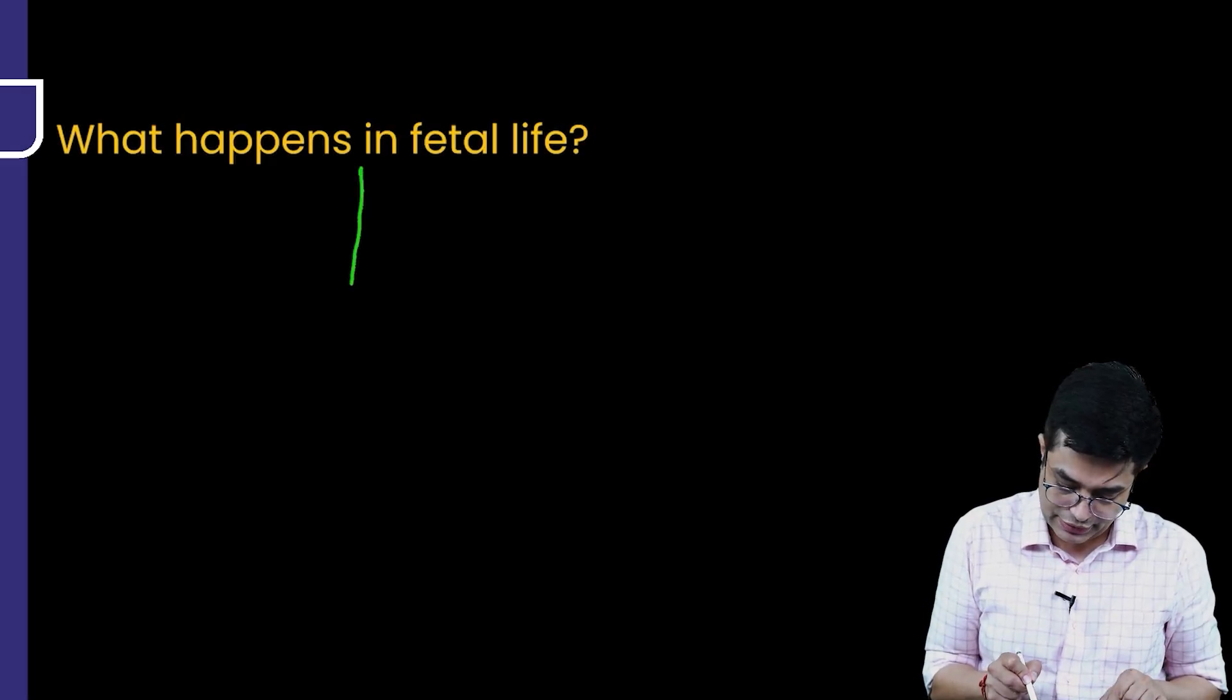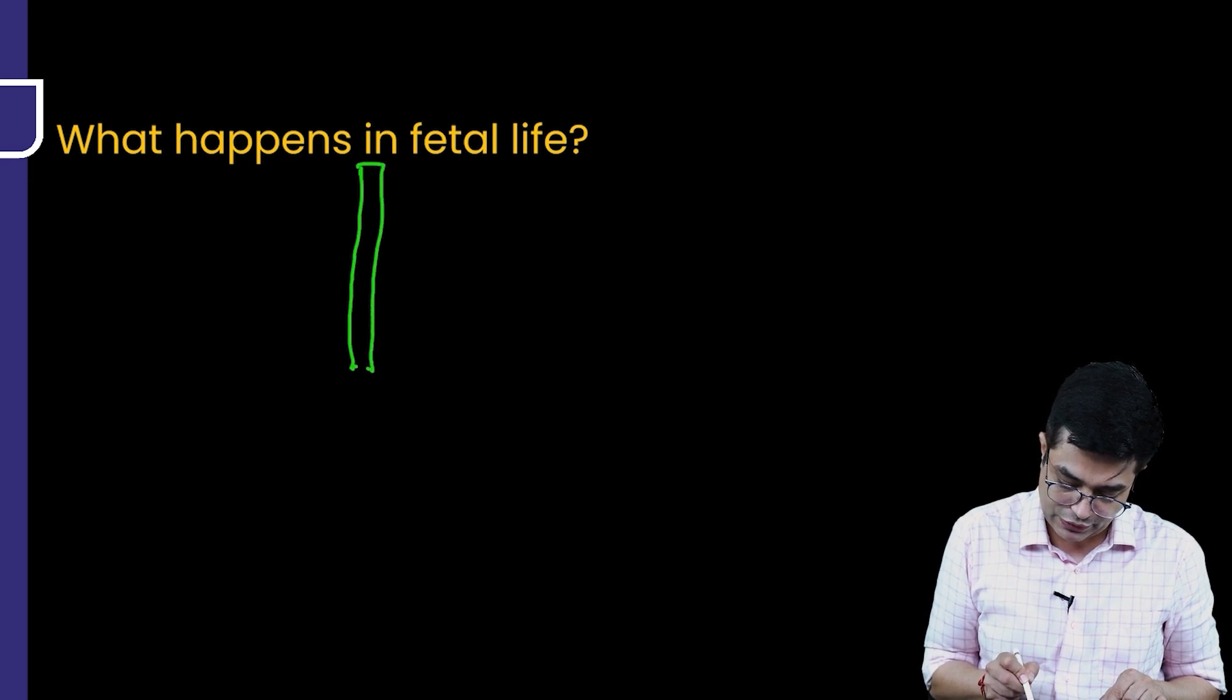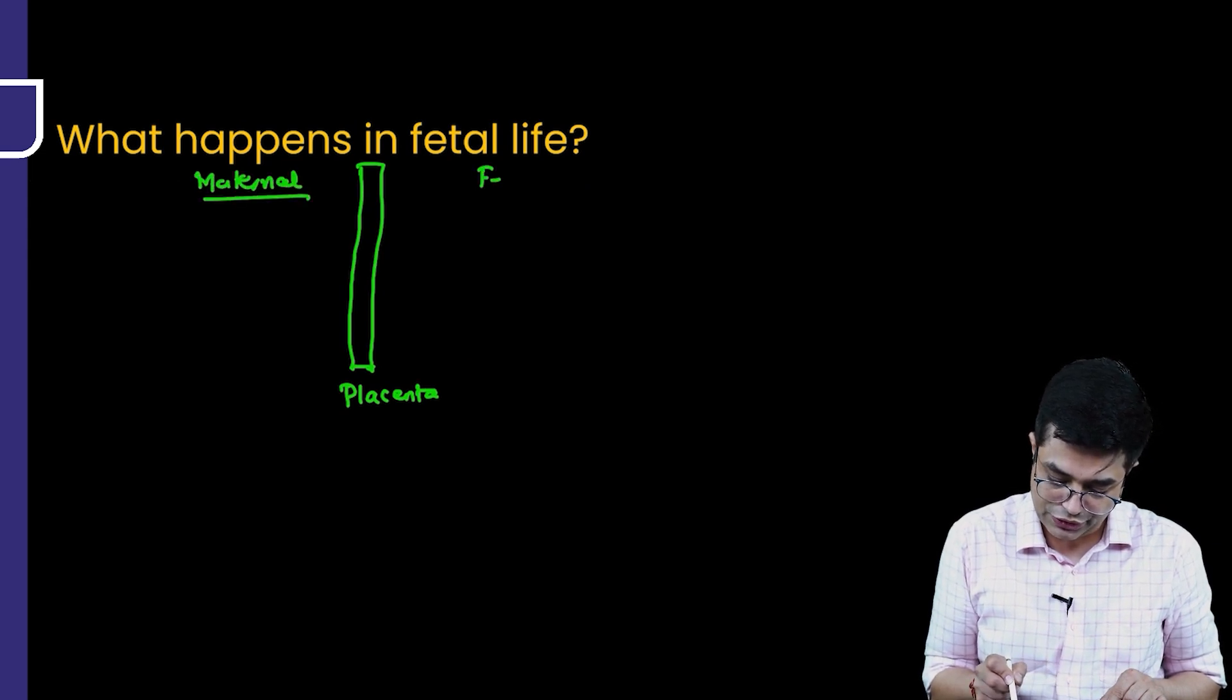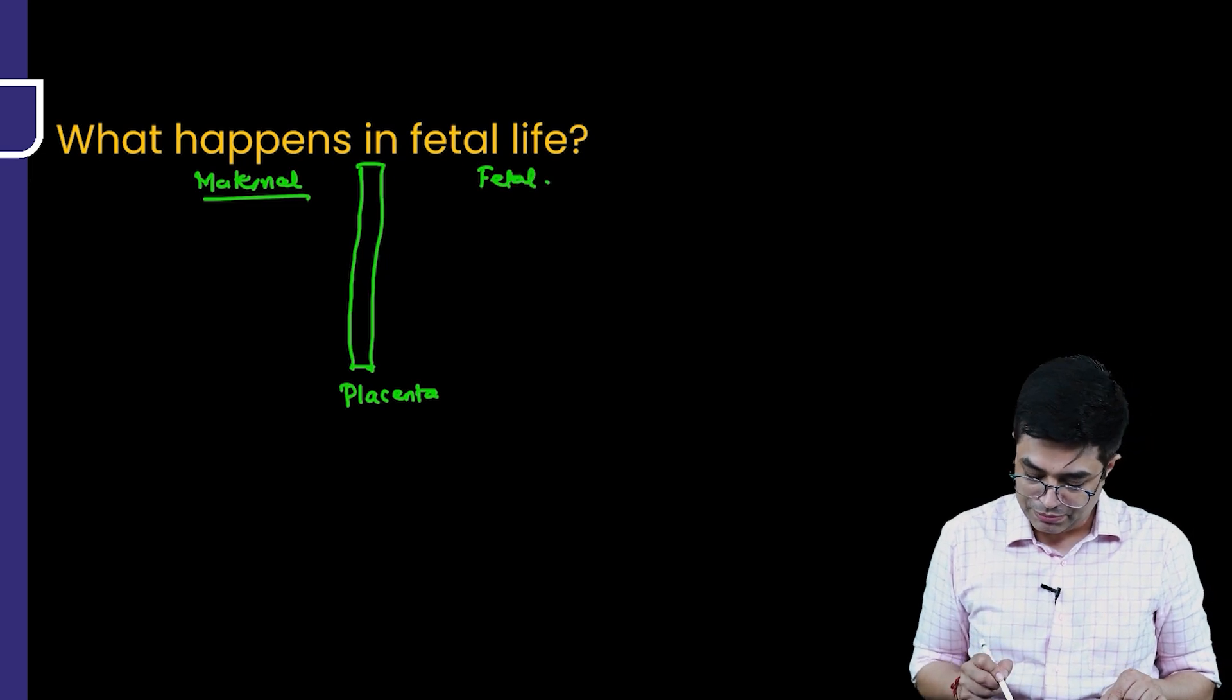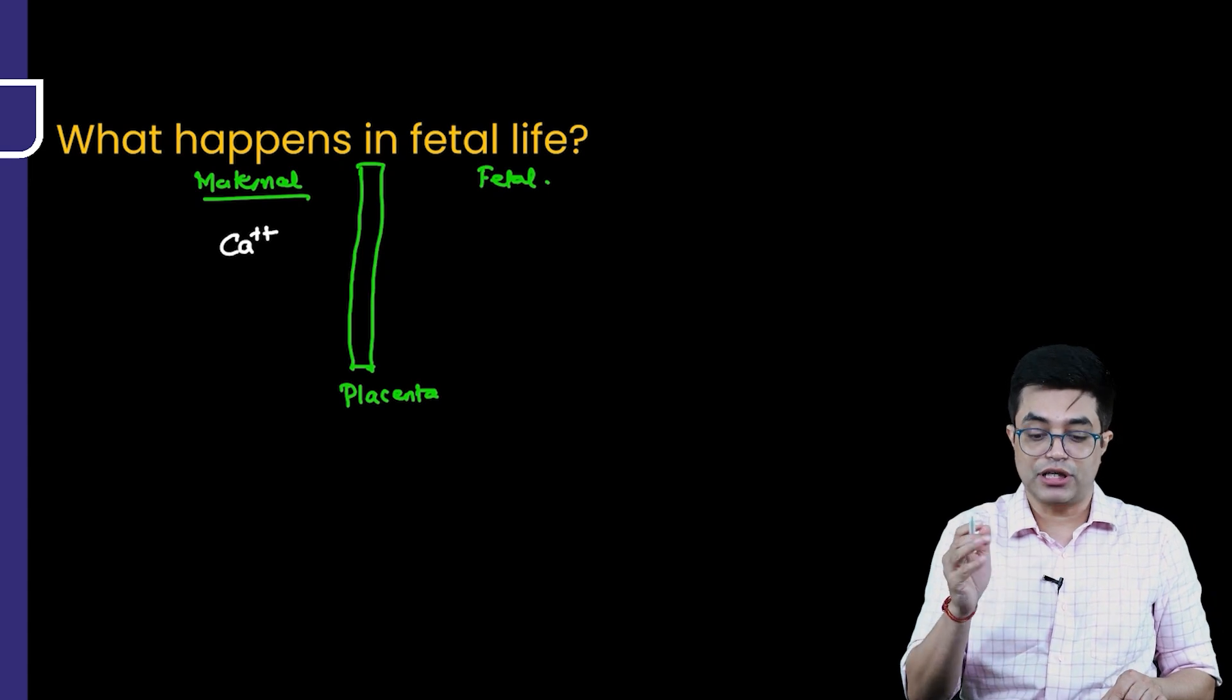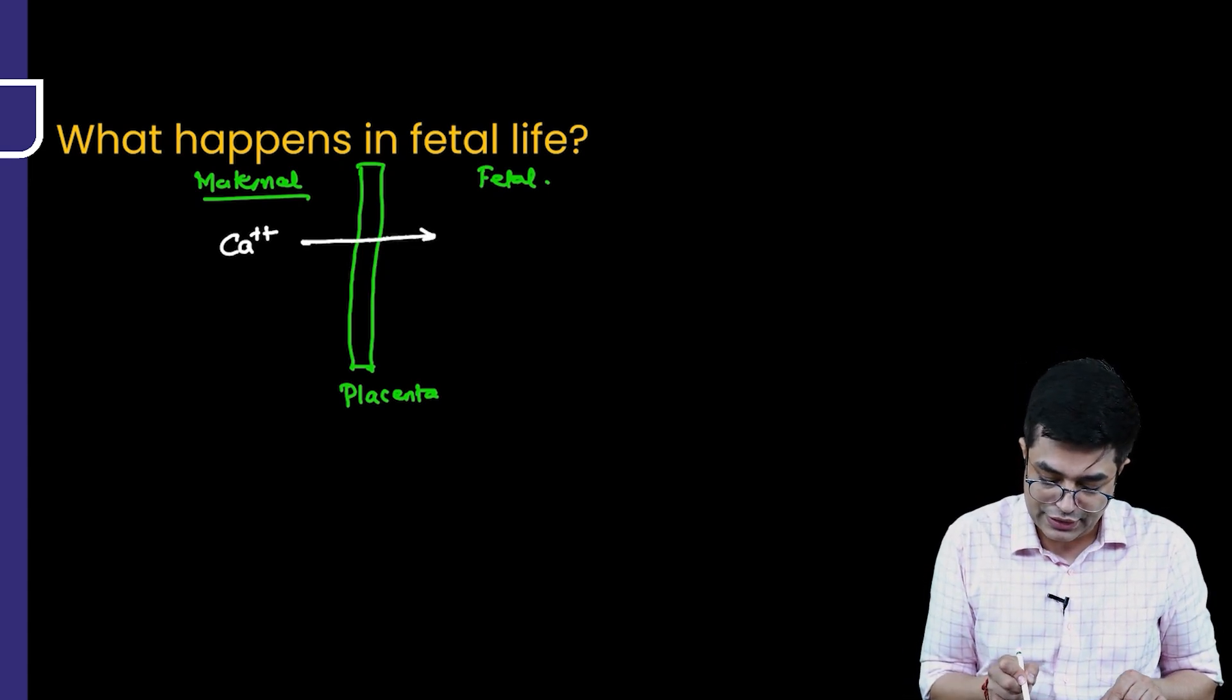Let me show it diagrammatically. This is the placenta. This is the maternal circulation, maternal blood, and this is the fetal circulation or fetal blood. Remember that calcium transmission, calcium transfer from mother to fetus occurs actively.